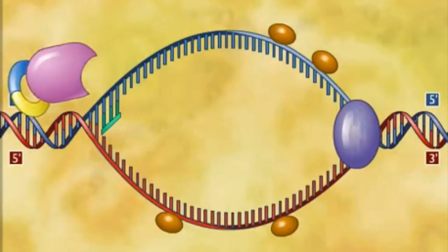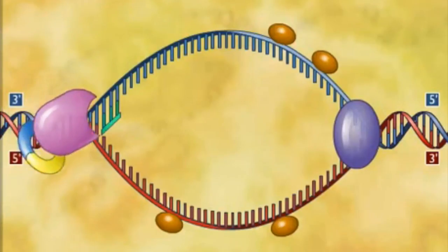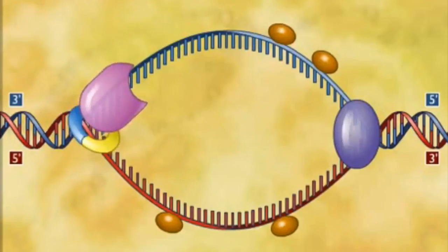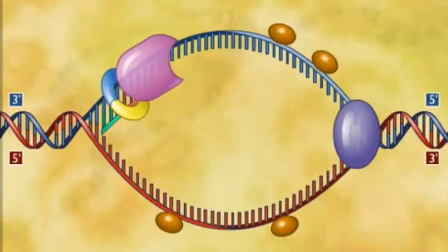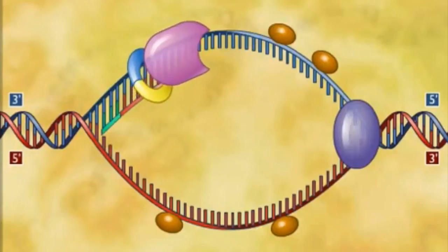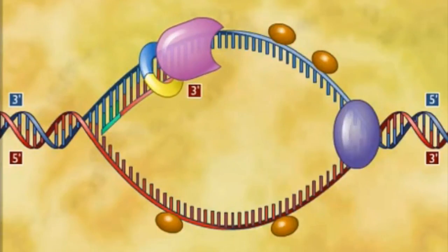DNA polymerase III adds a DNA nucleotide to the RNA primer and then continues adding DNA nucleotides to the growing end of a new DNA strand. The rate of elongation is about 500 nucleotides per second in bacteria and 50 per second in human cells.